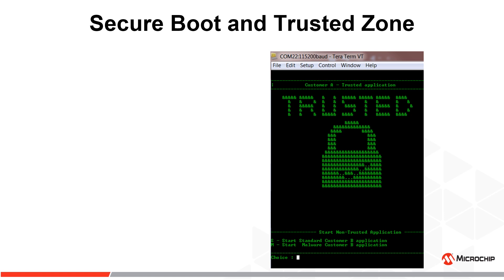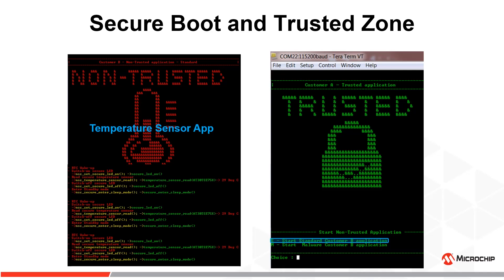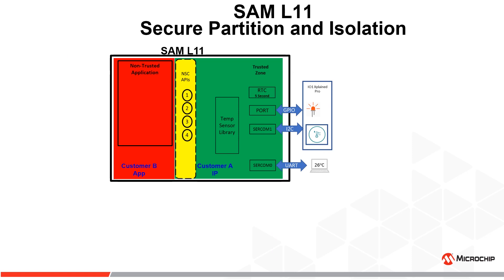Let's continue with the first section of the demo. Upon choosing S, Customer B's app is loaded, and SAM L11 securely reads and displays temperature every five seconds. To better understand the background of the first section, here is an illustration of SAM L11's secure partition into non-trusted and trusted zones. Customer A develops the temperature sensor library.